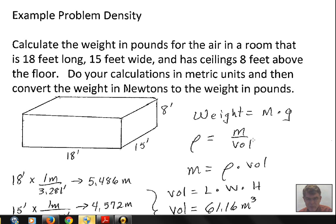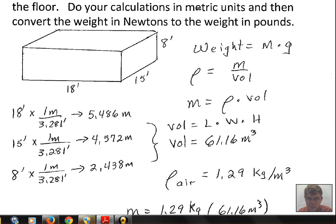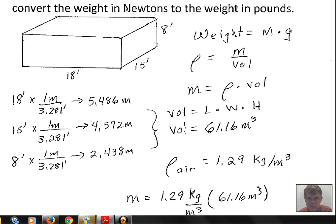We have the formula for density. Density is mass over volume. So if we want to calculate the mass, we just rearrange this formula. Multiply both sides by volume and we find that the mass is the density of air times the volume.